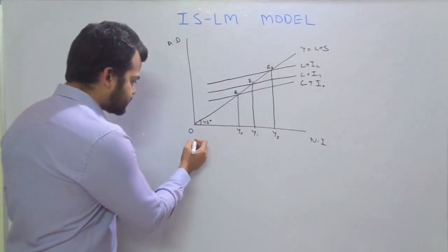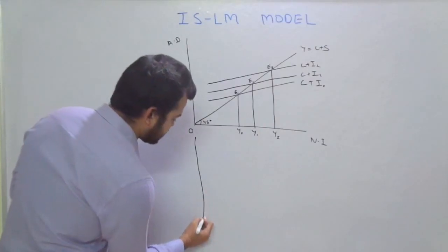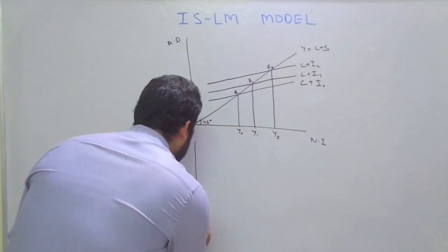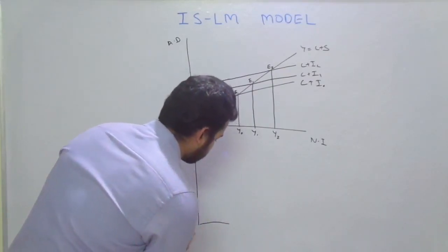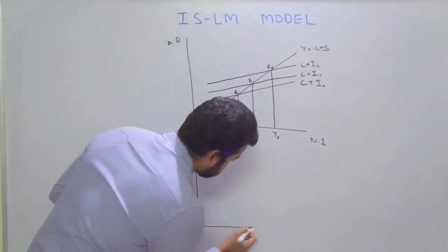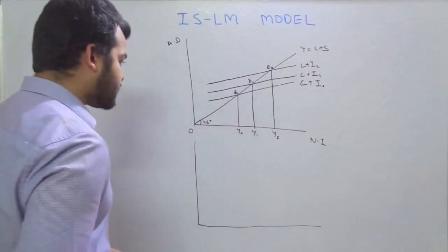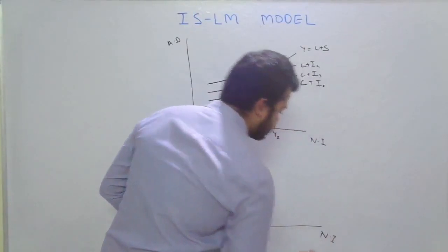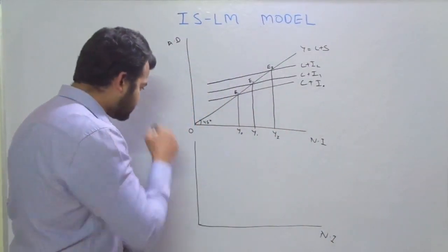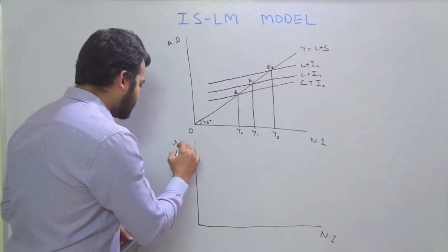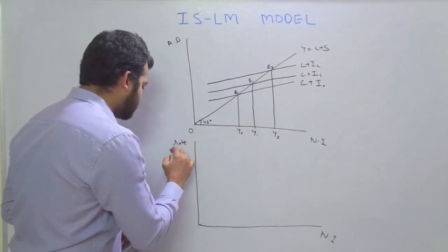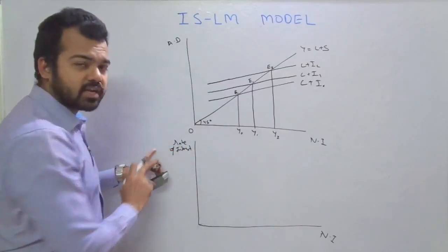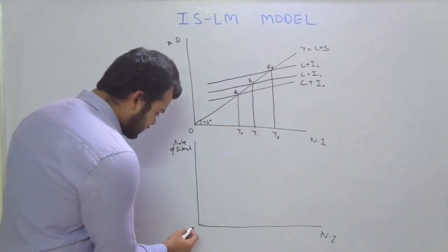Now we will derive the IS curve. On the second panel, we draw a graph with national income on the x-axis and rate of interest on the y-axis.